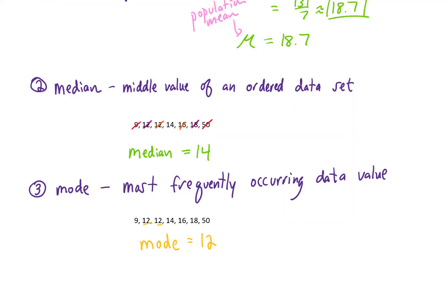If every data value in a set just appears once, then we say that we have no mode. If two data values appear most frequently — say if we had two 12s and two 14s in this data set — then we would have two modes.